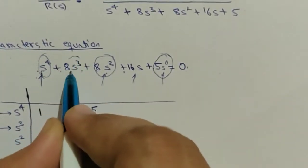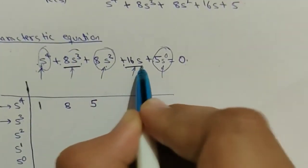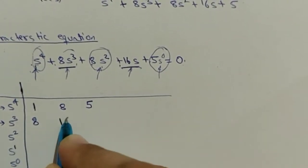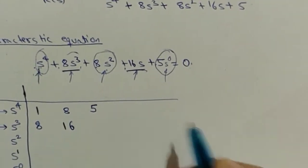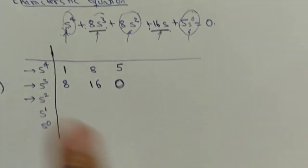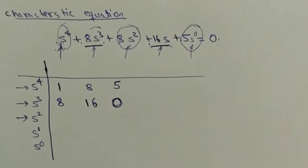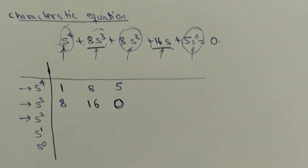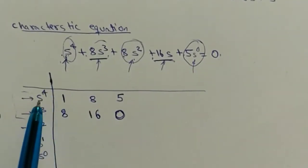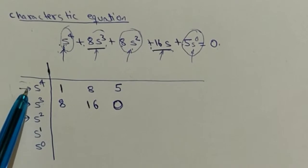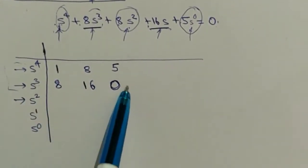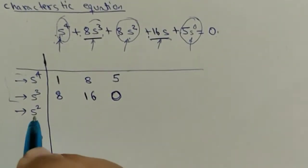The first two rows are always filled in this fashion: the first row gets even-power coefficients, the second row gets odd-power coefficients. Now for the third row, the real calculation begins.